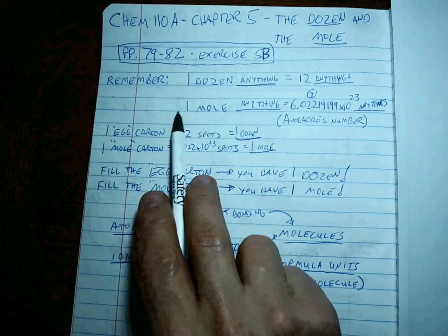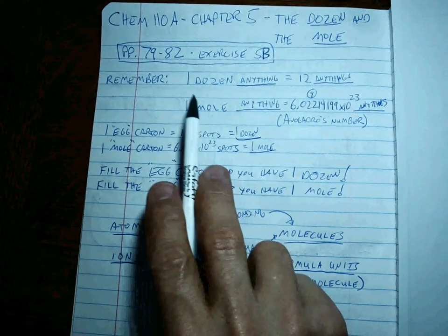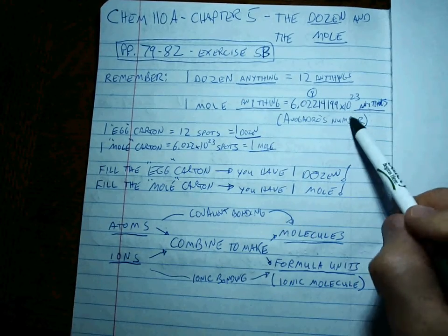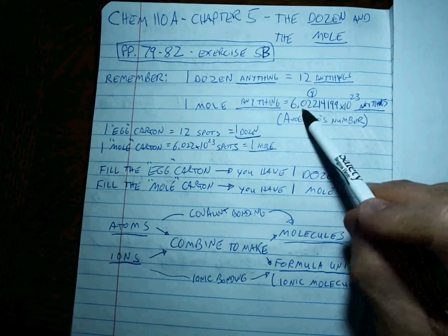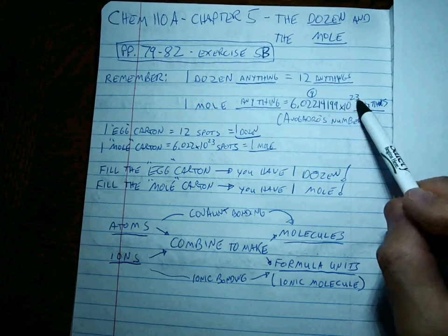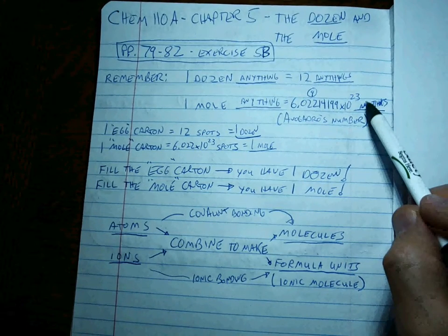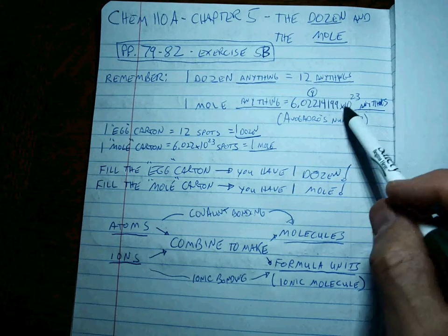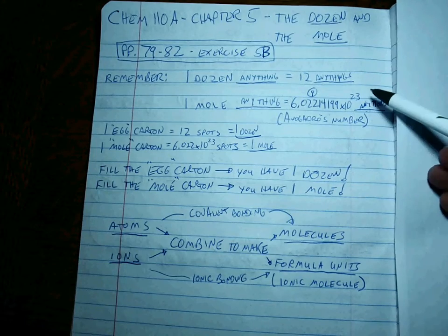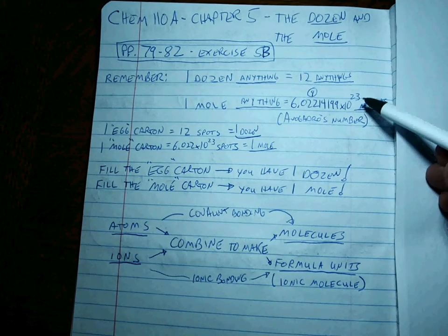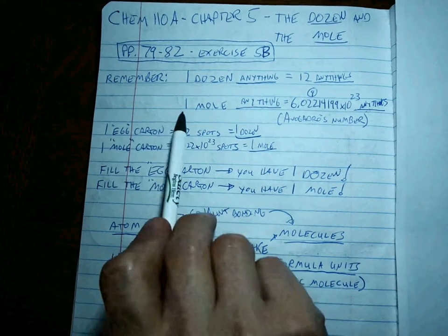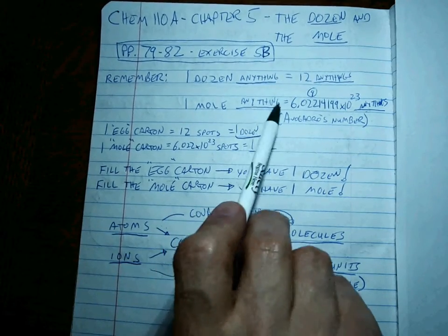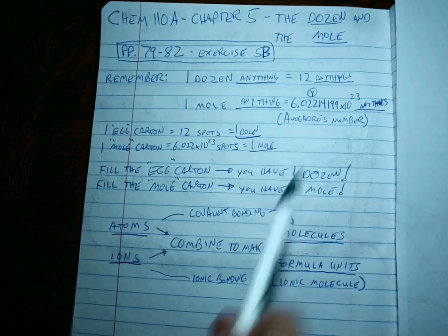One mole is like one chemical dozen. One mole of anything is equal to not 12, but Avogadro's number of them — 6.02214199 times 10 to the 23rd of them. It's a much more convenient number when you're dealing with things as small as atoms, ions, molecules, or formula units. So when we say one mole of sodium atoms, we have this many sodium atoms.